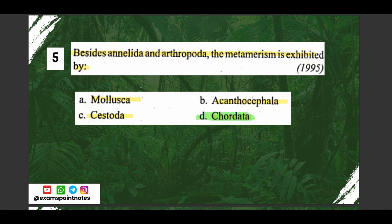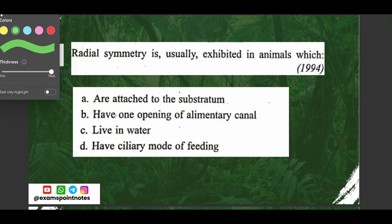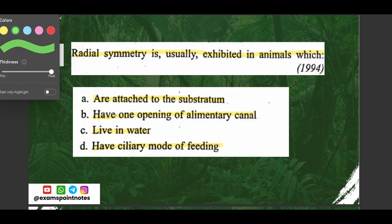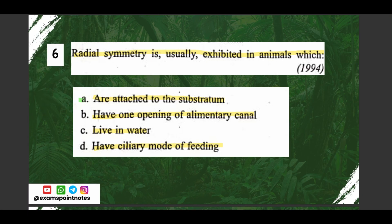Question number six: radial symmetry is usually exhibited in animals which — options are: A) are attached to substratum, B) have one opening of alimentary canal, C) live in water, D) have ciliary mode of feeding. The correct option is option A, attached to substratum.